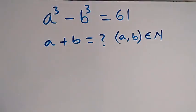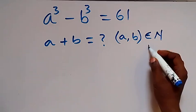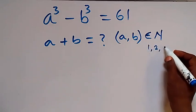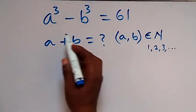Hello, you are welcome. How to solve this nice math problem: we have a raised to power 3 minus b raised to power 3 equals 61. Here we are finding a plus b, where a and b are members of the natural numbers, that is counting numbers 1, 2, 3 and so on.